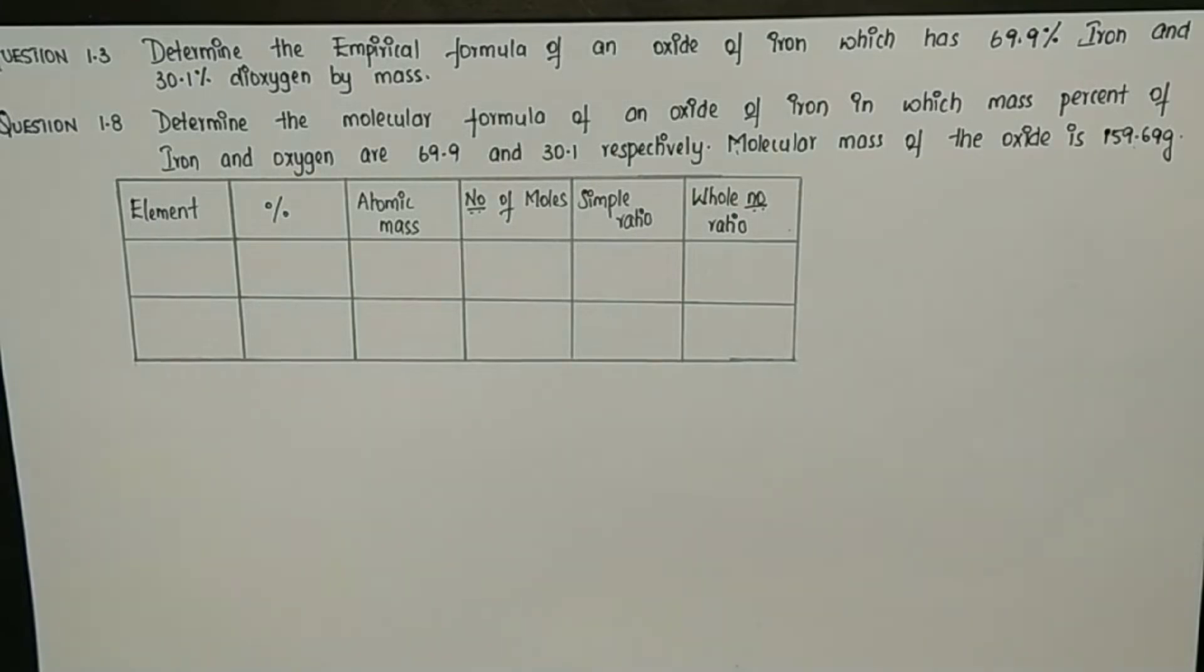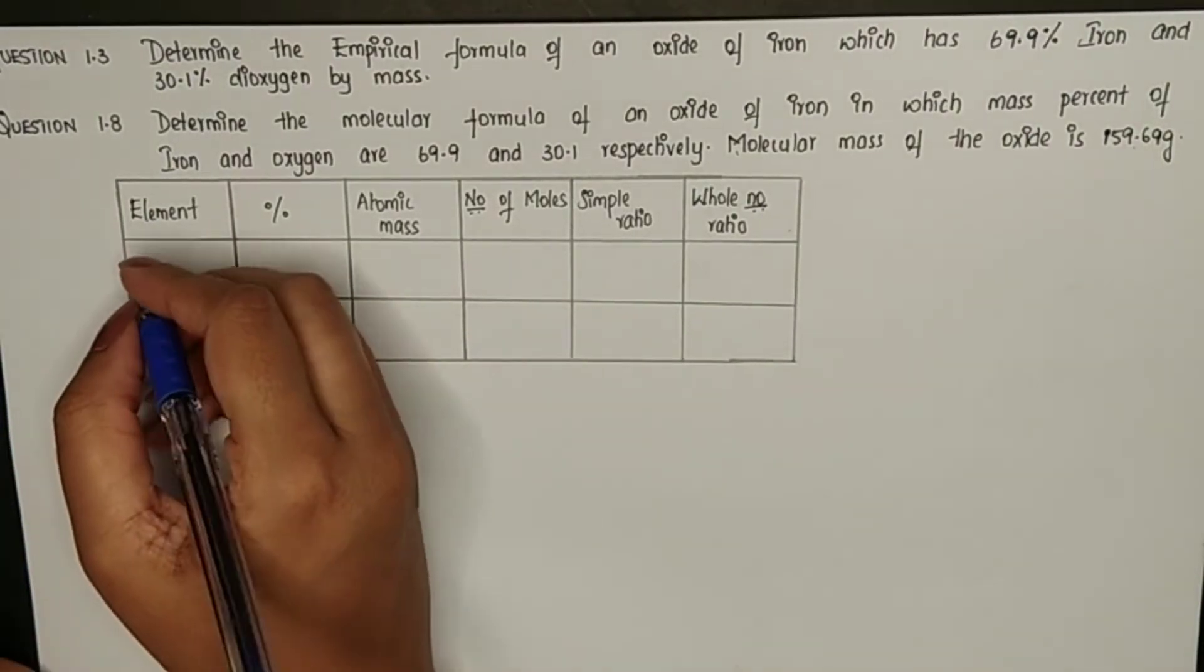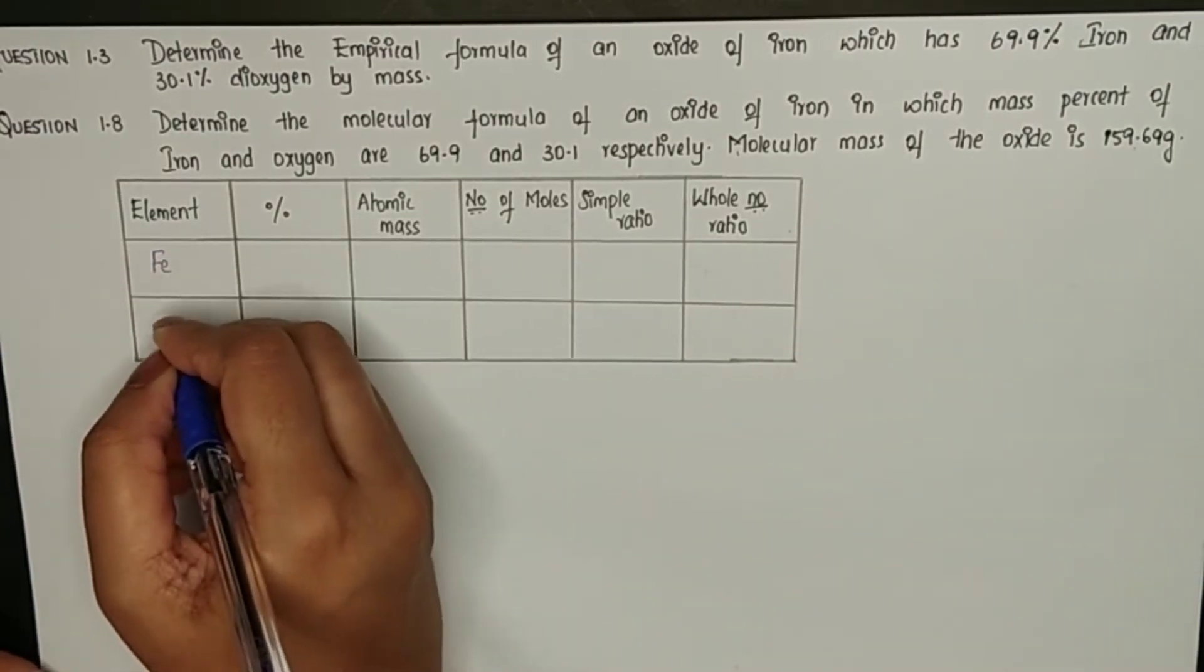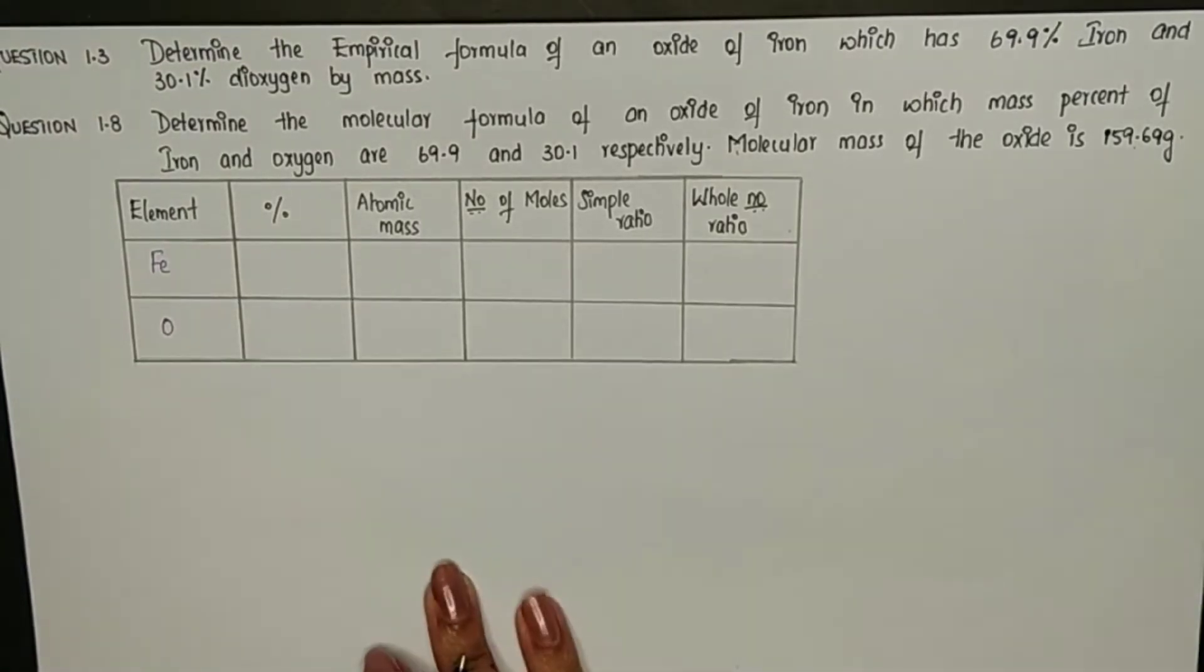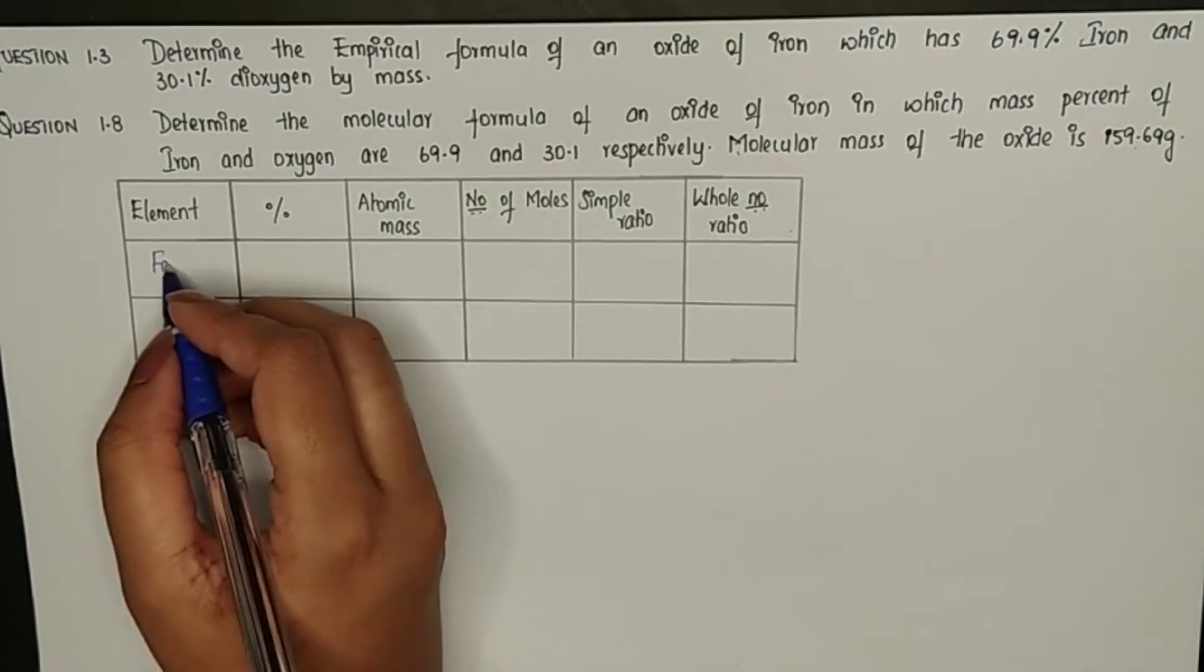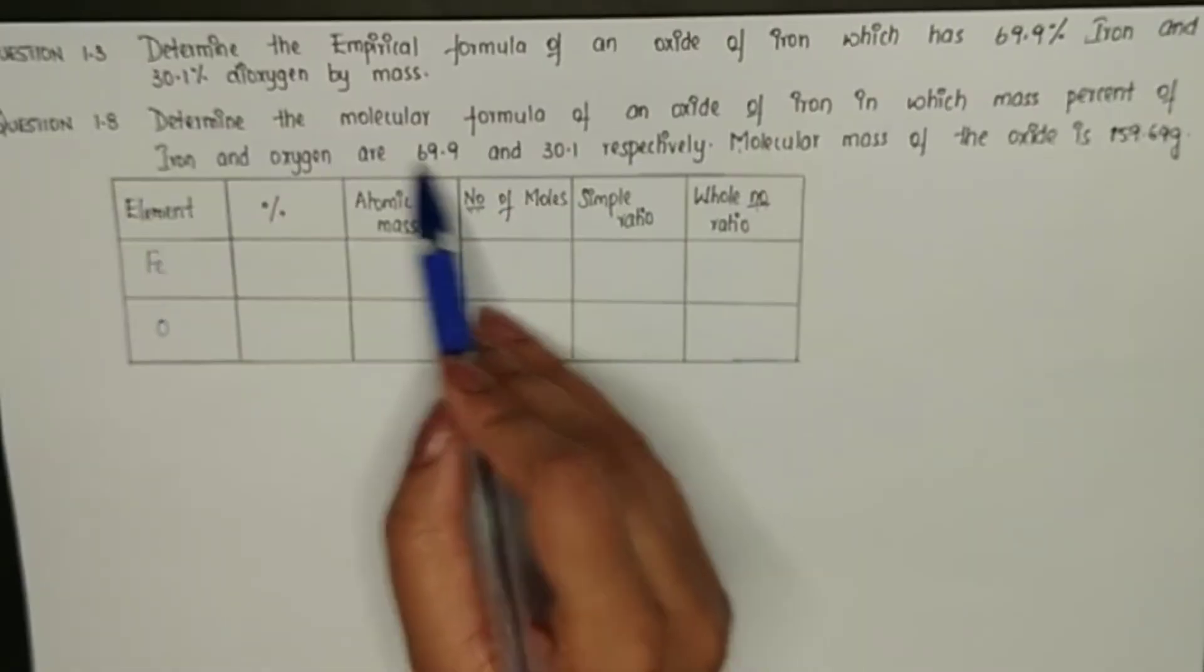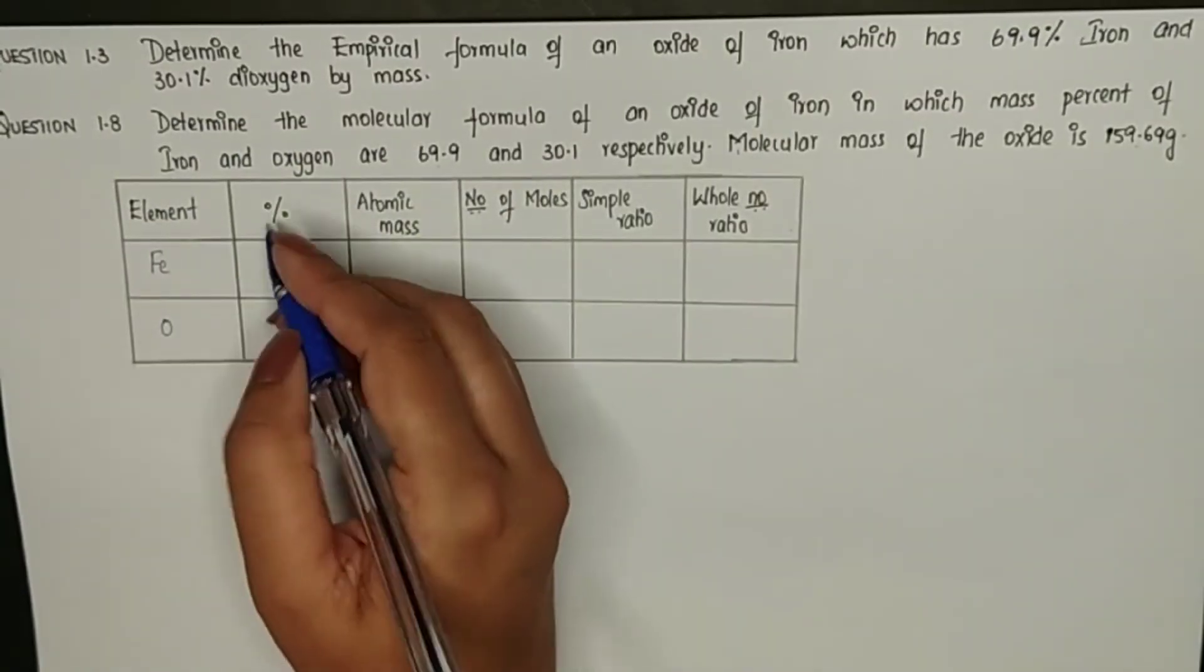First we will put down whatever values we got in the problem. Iron is the element and oxygen is the other element. For iron, percentage as per the question is 69.9 and 30.1 for oxygen.